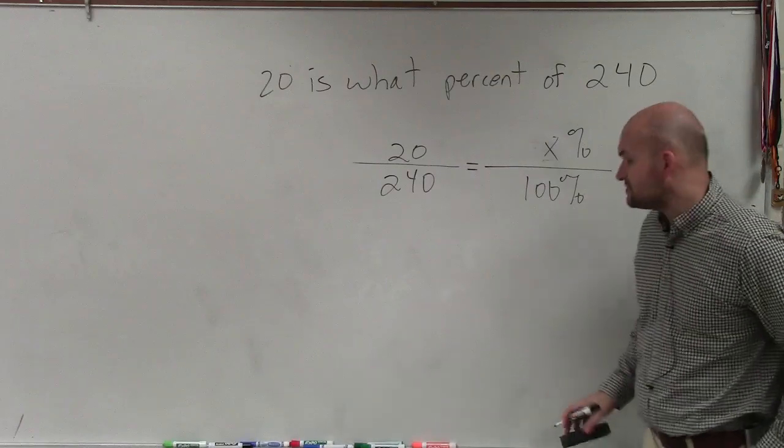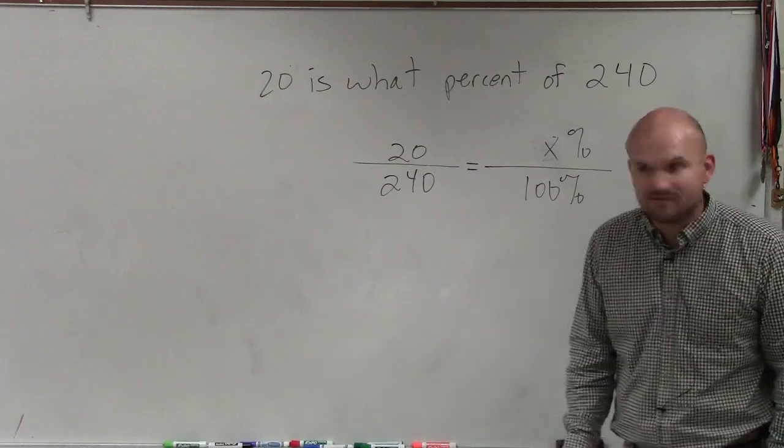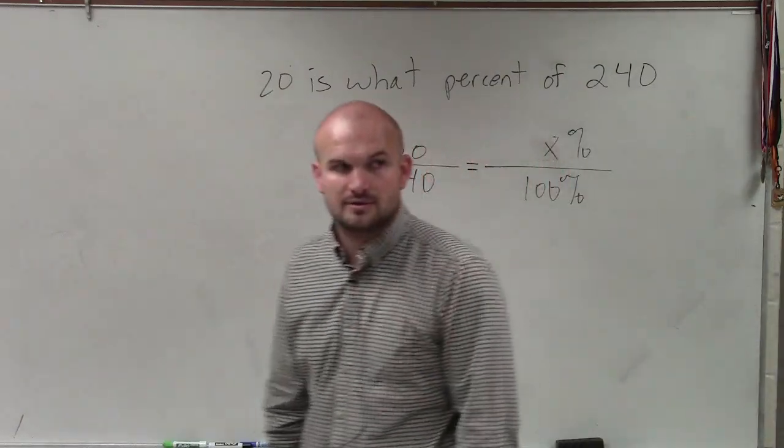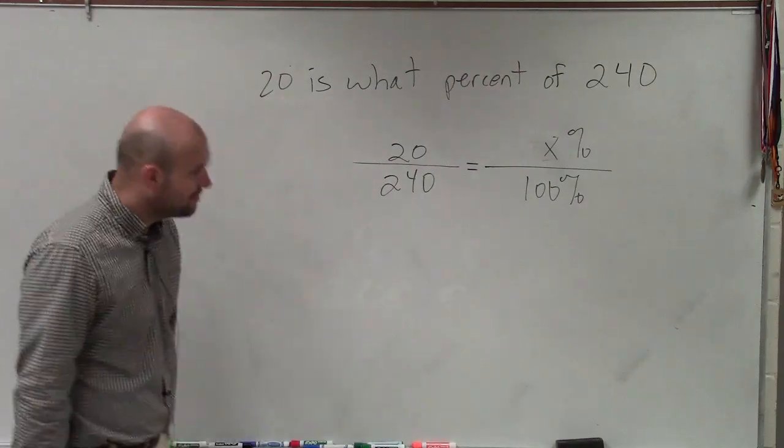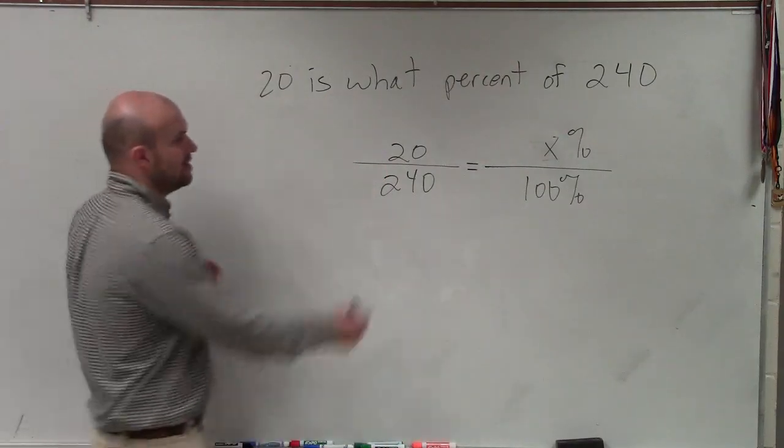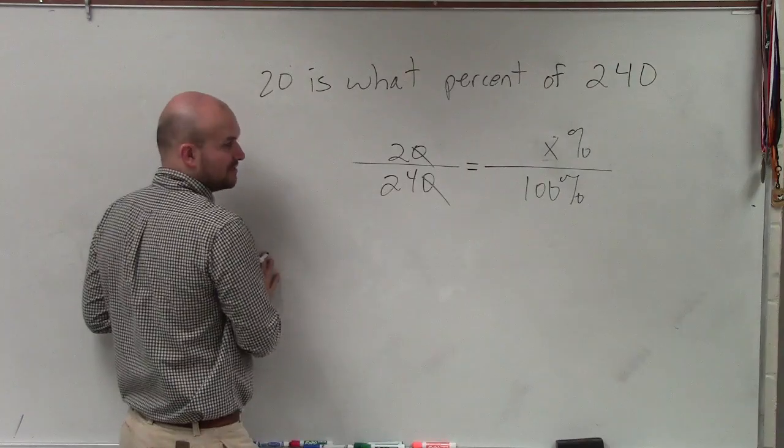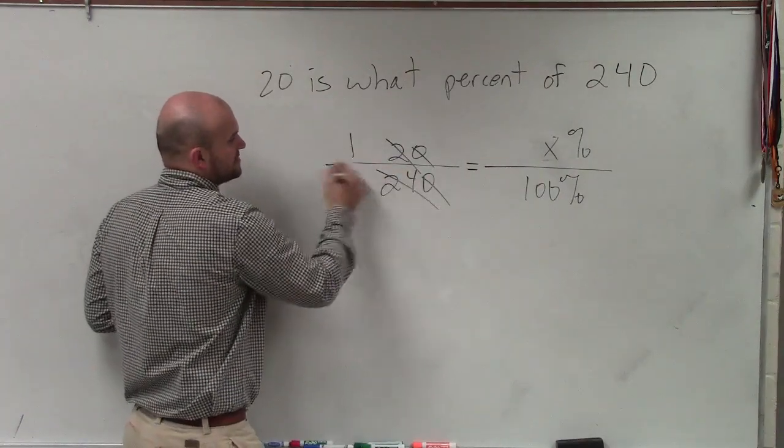Now, one of the first steps we'll always want to do is simplify, simplify, simplify, right? Always simplify before we can do anything. So I already noticed I can cancel out those zeros. I can already simplify this to 1 over 12.